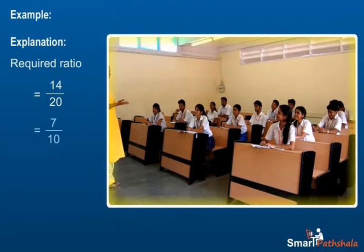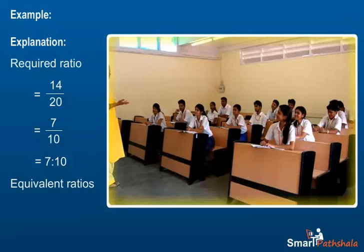Two ratios are equivalent if we can get the second ratio by multiplying or dividing the first ratio by the same number.